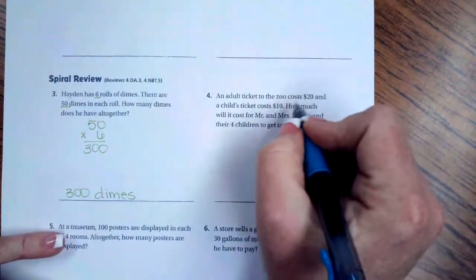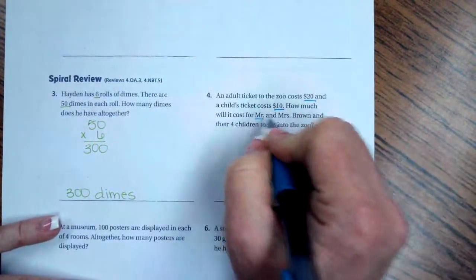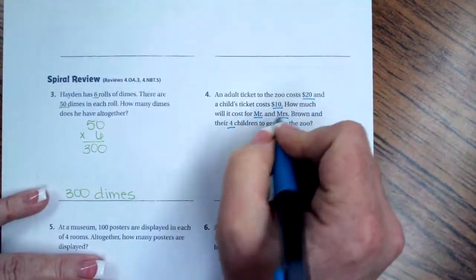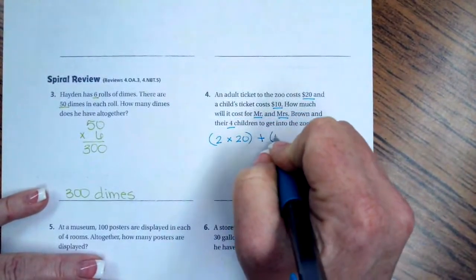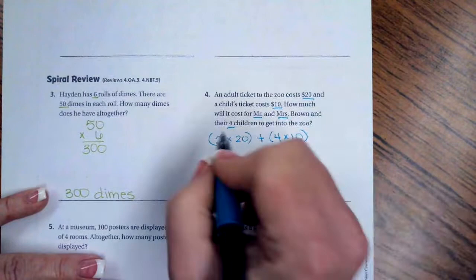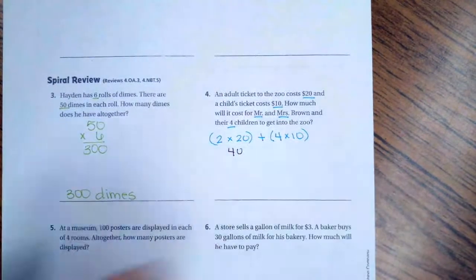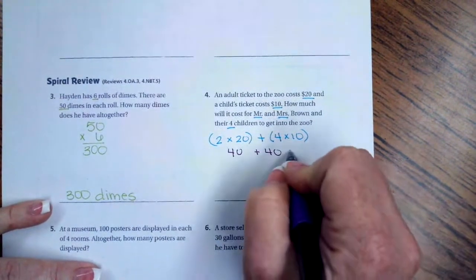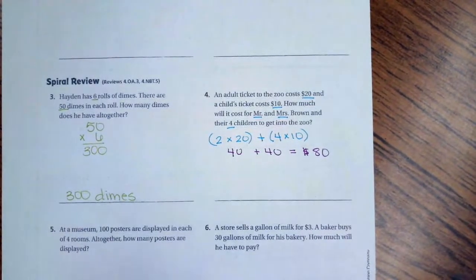Number 4. An adult ticket to the zoo costs $20, and a child's ticket costs $10. How much will it cost for Mr. and Mrs. Brown and their 4 children? So, there are 2 adults, Mr. and Mrs. Brown, and each one of those is $20. Plus, they have 4 children, and those are each $10. So now, 2 times 20 is 40. And 4 times 10 is another 40. 40 and 40? $80.